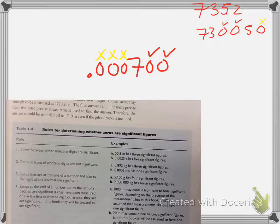I do have a practice sheet for you. This is one that will not be graded — it's purely for your own practice. It's linked on the chapter plan, and the key is linked. Do a few, check them. It's not a graded five-point practice like I did in chemistry. It's just to make sure you're getting it. Do a couple in each section and call it a day.